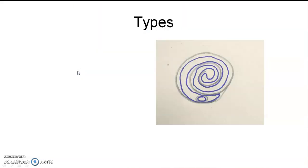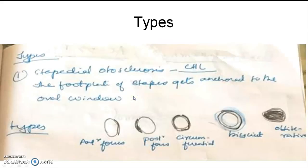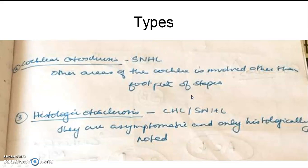There are three types of otosclerosis. First, stapedial otosclerosis — most common, occurring near the footplate of the stapes. The focus of occlusion can be in the anterior part, posterior part, or entire circumference (circumferential). It can also be biscuit type, where two outer layers with cheesy material in between are present, or obliterative type where the entire footplate is fully sclerosed, resulting in conductive hearing loss.